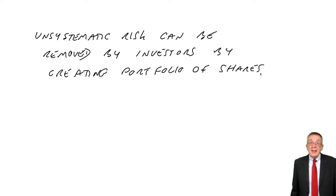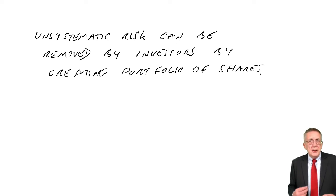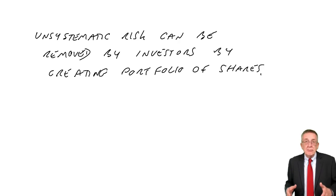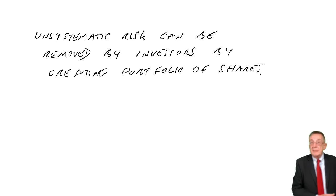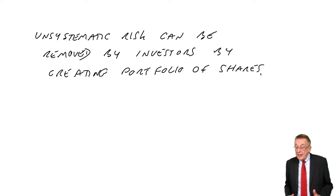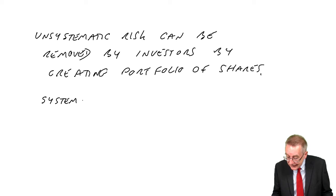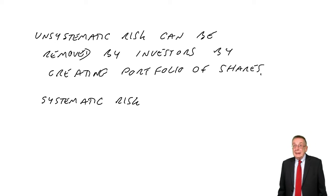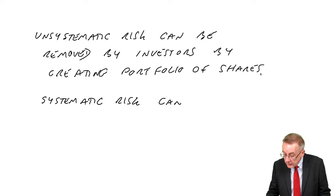Now, we can't all afford to invest money in lots of different shares, but we can effectively, because we've got things like unit trusts or mutual funds. Where you might only have a little money — a few hundred dollars — but put it in a mutual fund, and they put lots of people's money together and then invest in lots of different shares. But if we create a portfolio, that unsystematic risk can be removed — it cancels out. However, systematic risk is due to factors in the economy as a whole. If inflation rates change, all shares will be affected, all companies will be affected. Systematic risk cannot be removed. But the level depends on the type of business.